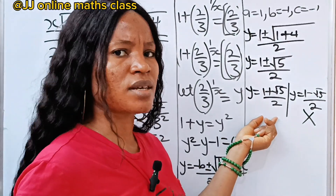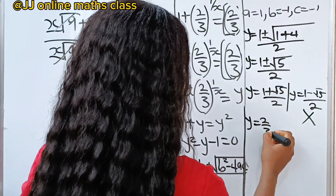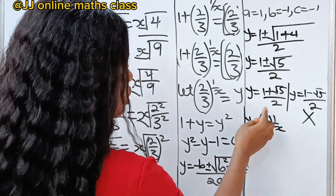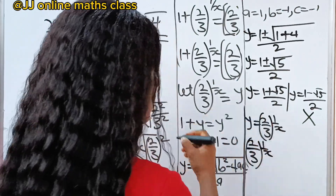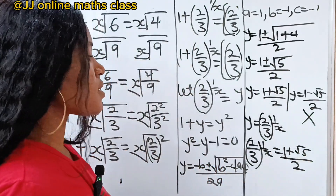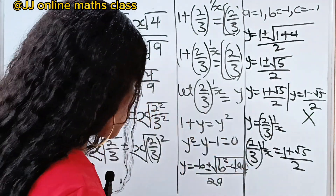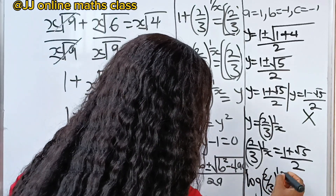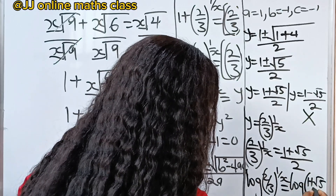Now let's solve for the valid y. Recall that y is equal to 2 over 3 raised to the power of 1 over x. So if we substitute this into the equation, we are going to have 2 over 3 raised to the power of 1 over x is equal to 1 plus root 5 over 2.